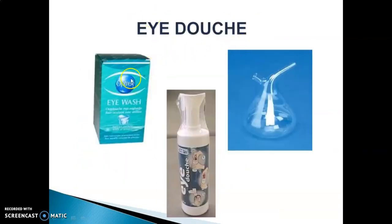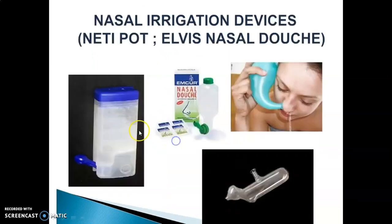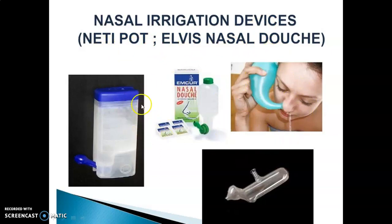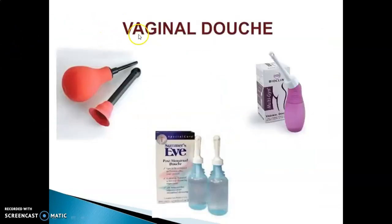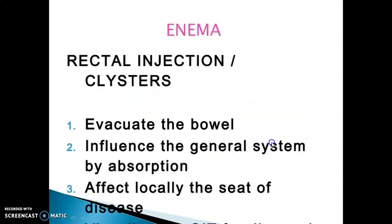Eye Douches — some examples are shown. Nasal irrigation devices include the Neti Pot and Elviss Nasal Douche, with diagrams shown. Vaginal Douches are also illustrated with relevant pictures.